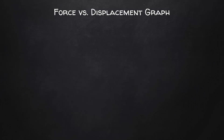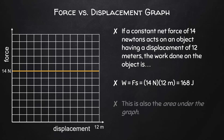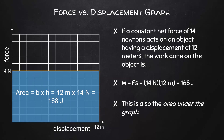We must also be able to interpret graphs related to work and energy. In this case, we'll be looking at graphs of force versus displacement. This graph shows a constant force of 14 newtons causing an object to eventually have a displacement of 12 meters. The work done would be force times displacement, which gives us 168 joules. This is also the area under the graph — that rectangle has a base of 12 meters and a height of 14 newtons with an area of 168 joules.